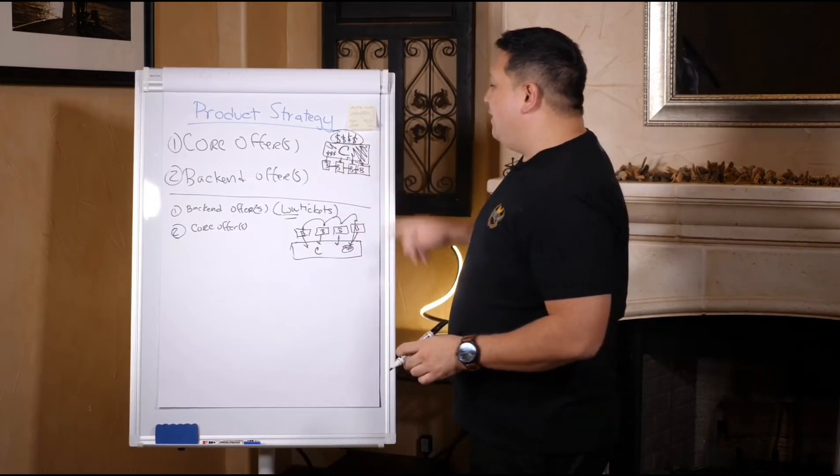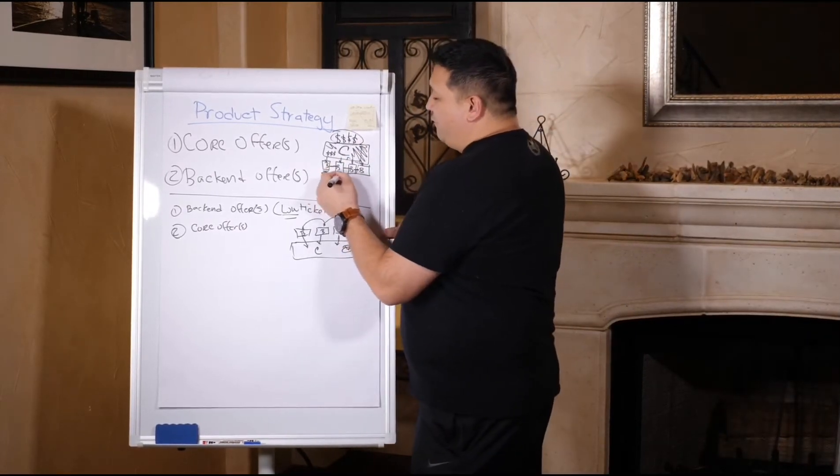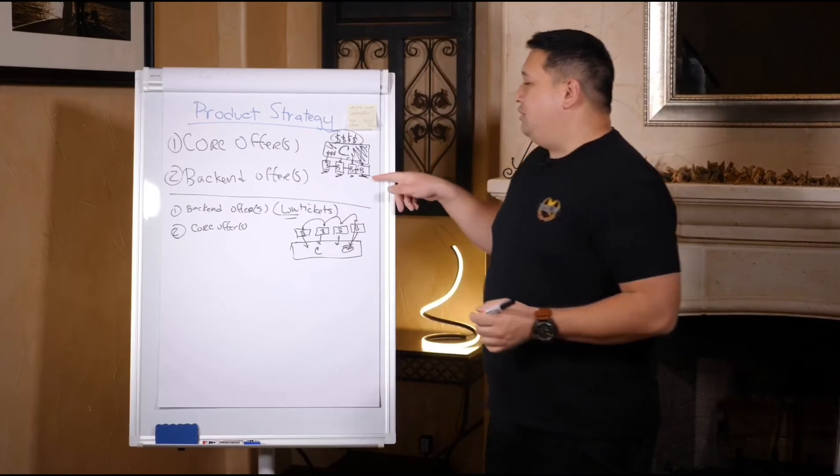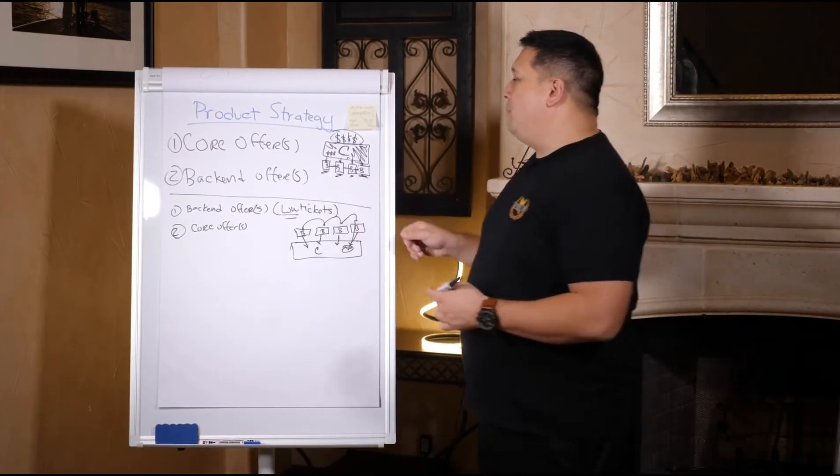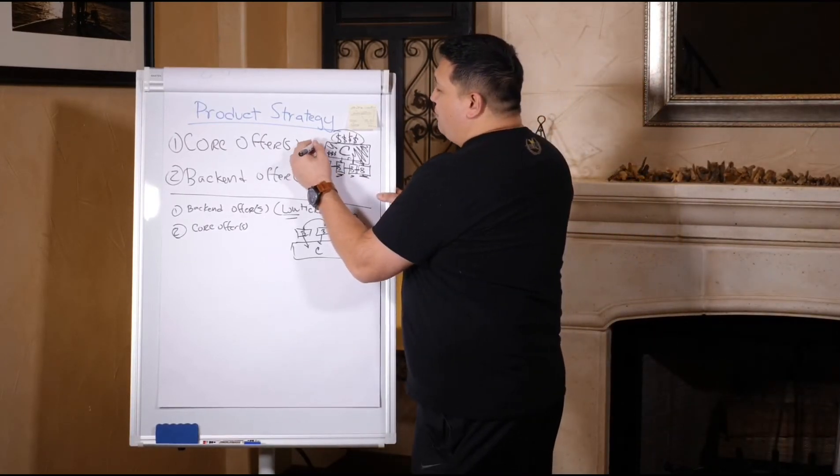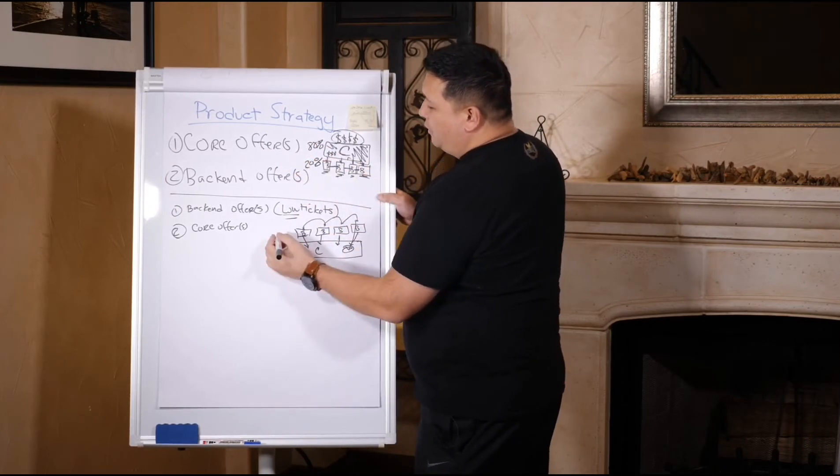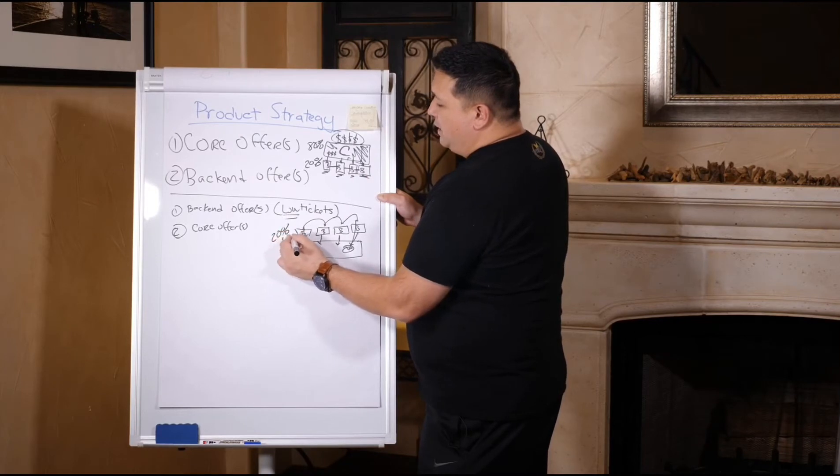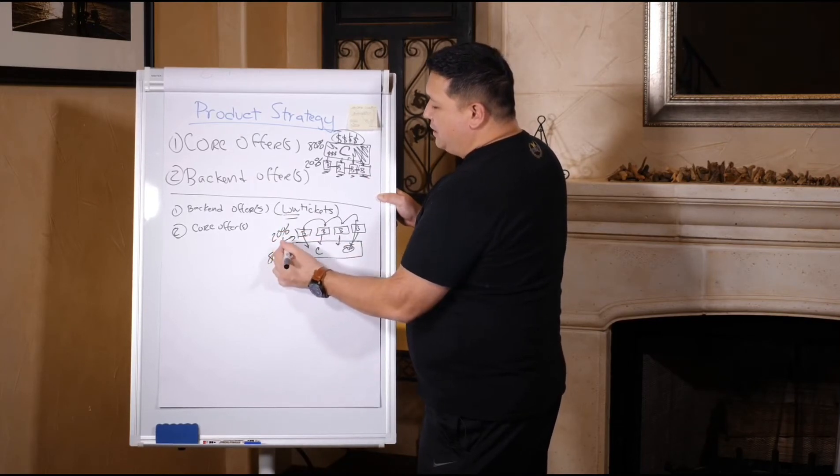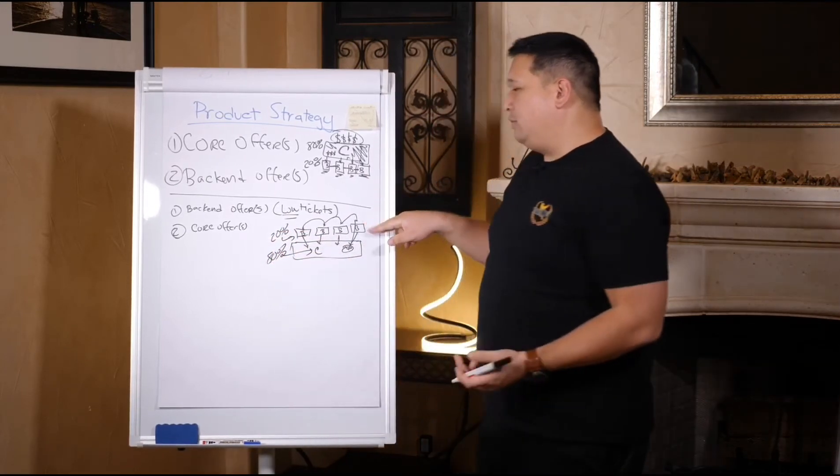Once they get in, then you might have like affiliate offers and things that you can sell them where you just make a little bit more money. So here, 80% of your revenue is coming from your core, 20% is coming from your backend offers. And here, 20% is coming from your backend, 80% is coming from your core or your low ticket, whatever you want to call that.